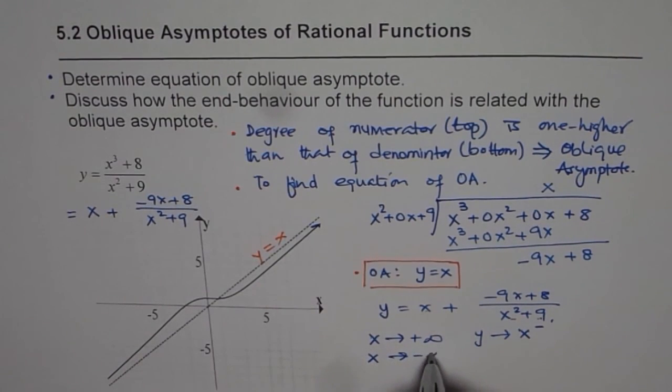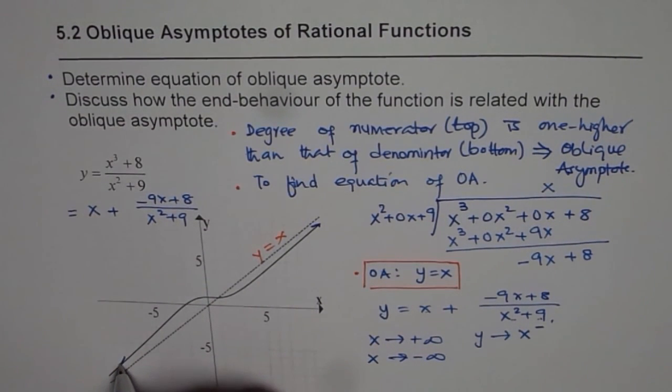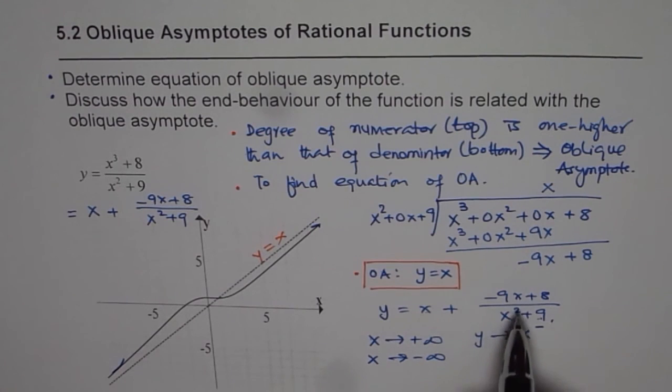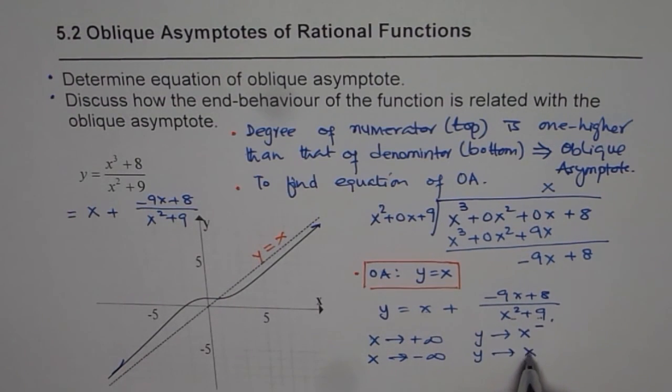So if x is approaching minus infinity, that is on this side, in that case, minus and minus becomes plus. So y approaches x from the positive side, from the top side.